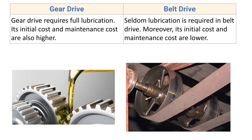Gear drive requires full lubrication, and its initial cost and maintenance cost are also higher. The two mating gears are either partially or fully immersed in lubricating oil while transmitting power, so the oil absorbs heat and provides lubrication. Belt drive seldom requires lubrication; moreover, its initial cost and maintenance cost are also lower. Belt drive does not require regular lubrication — only occasional lubrication is needed, and excess lubrication can increase the chance of slip.